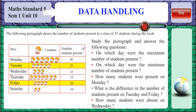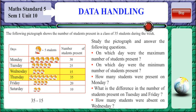How many students were absent on Wednesday? If we take that the maximum number of students are 35 and on Wednesday only 15 students were present, then the number of students absent on Wednesday would be 35 minus 15, which is 20 students.